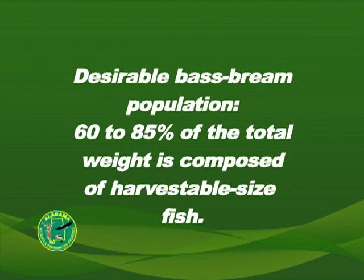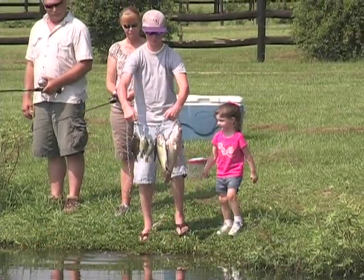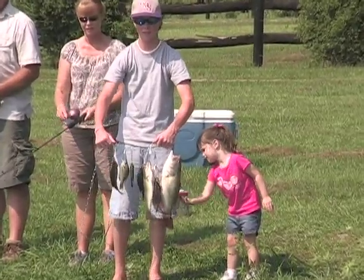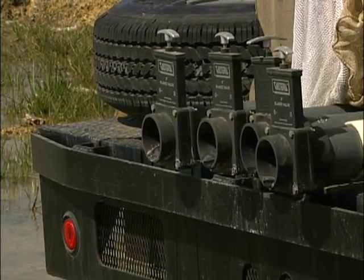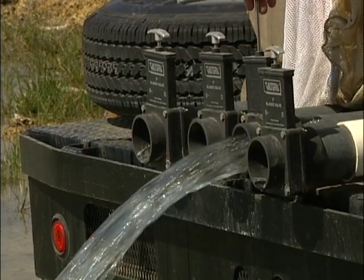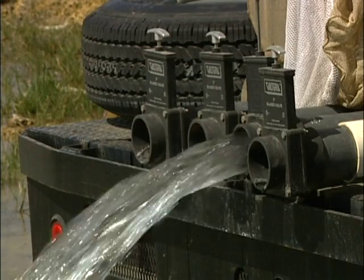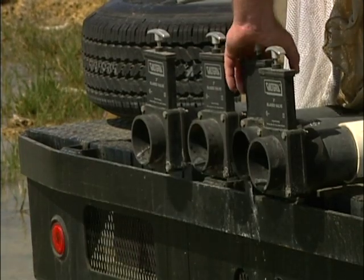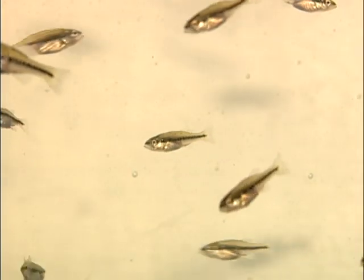A desirable bass-bream population is one in which 60 to 85 percent of the total weight is composed of harvestable-sized fish. If a pond maintains such a population and provides satisfactory yields of fish from year to year, it is considered to have a balanced fish population. The time of year the pond is stocked is critical in achieving a balanced fish population. Bream are stocked in the fall or winter, and bass are stocked the following May or June. A bream and largemouth bass population normally attains a balanced condition 12 to 14 months after the bass fingerlings are stocked.